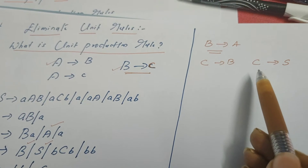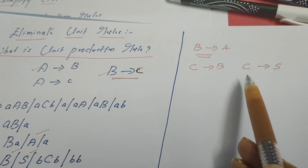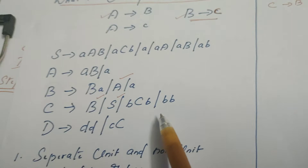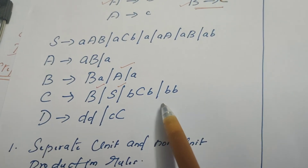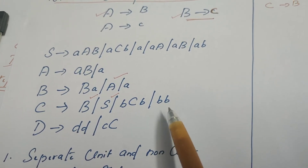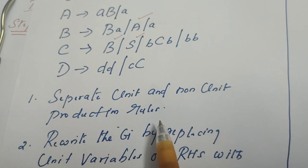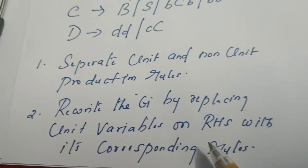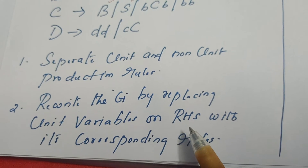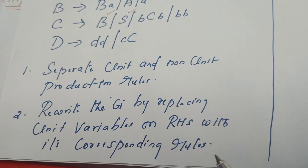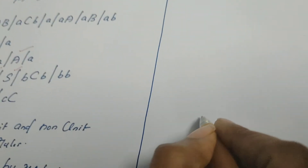All these unit rules are to be eliminated. Even after elimination, the meaning of the grammar should not change — the language recognized by this grammar should remain the same after removing unit production rules. The first step is to separate unit and non-unit production rules, which we have already done. The second step is to rewrite the grammar by replacing the unit variables on the right-hand side with their corresponding rules.